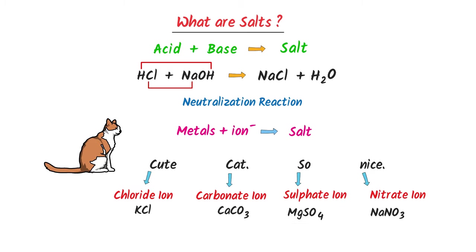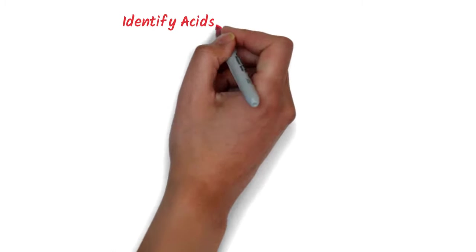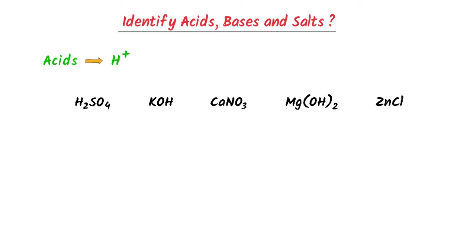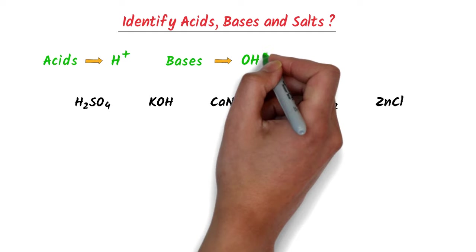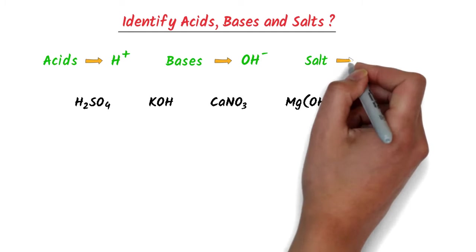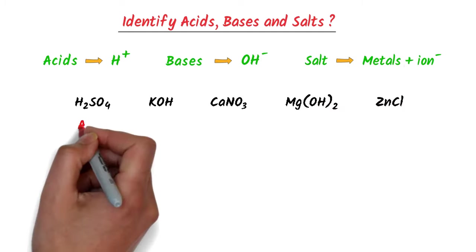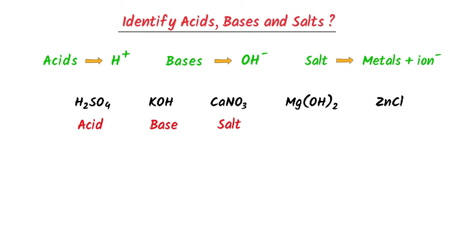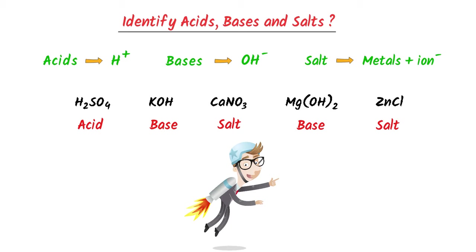Let me teach you one bonus question: how to identify acids, bases, and salts. We know that acids contain hydrogen ion, bases contain hydroxide ion, and salts contain metals plus ions. Using this trick, we can easily identify acids, bases, and salts.